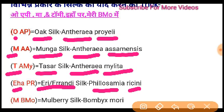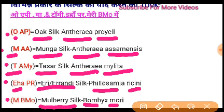Now look at O, A, P, Ma, Tommy. In Mylitta. It is called Mulberry silk. Mulberry silk. B, C, and B — M.O. It means BMO. BMO means Bombyx, BMO means Mori. You can remember it here.